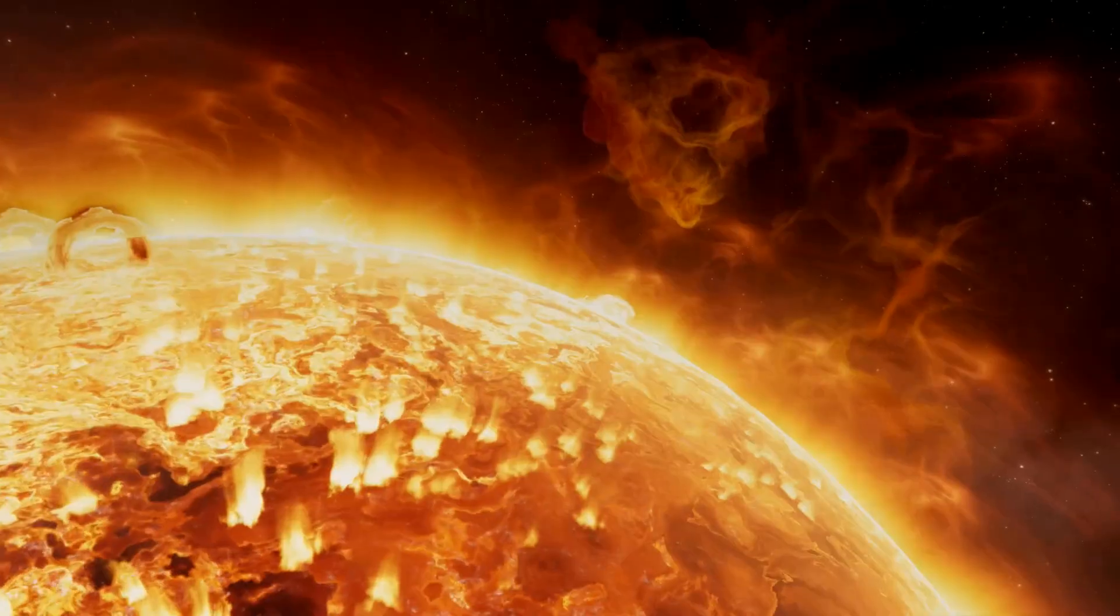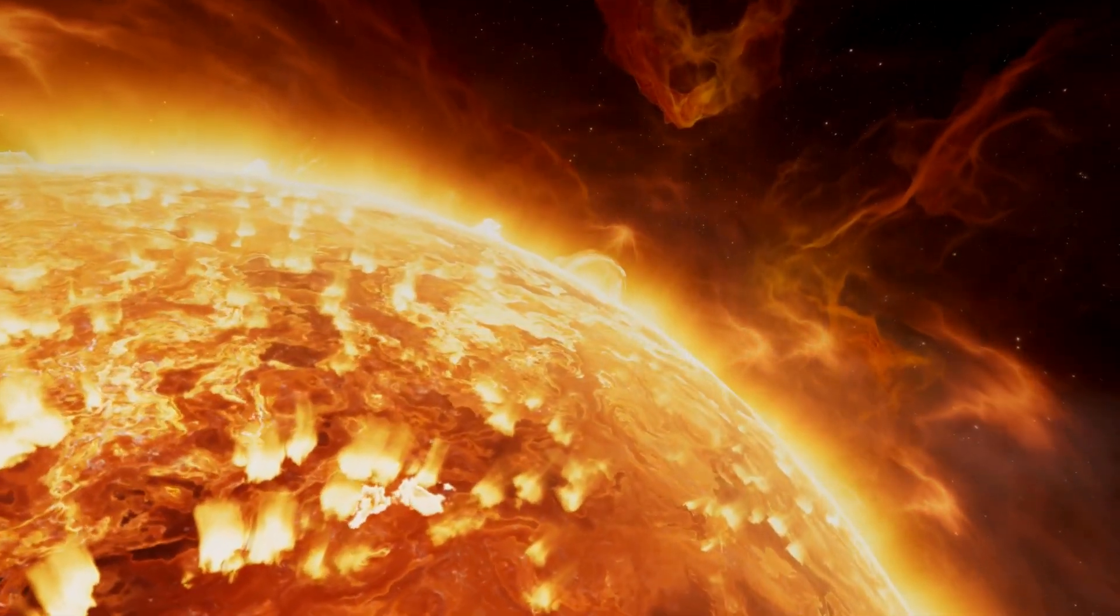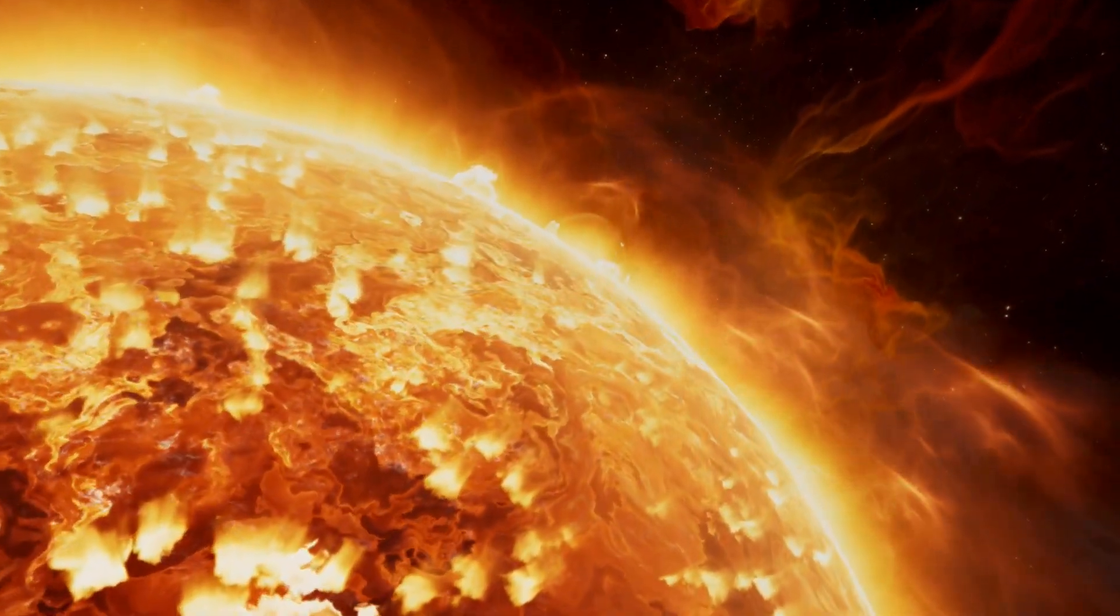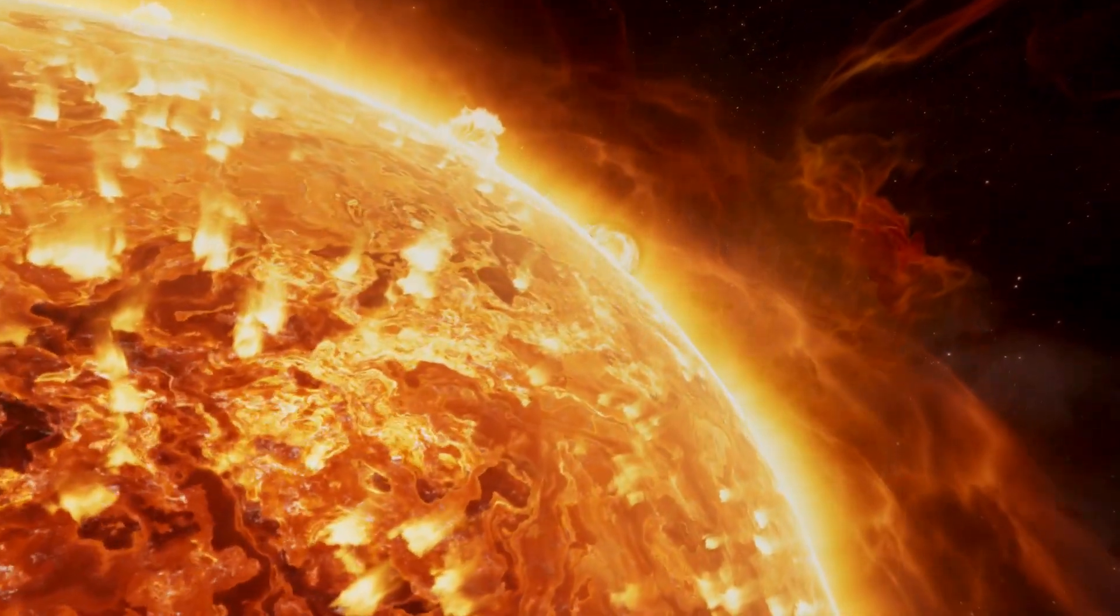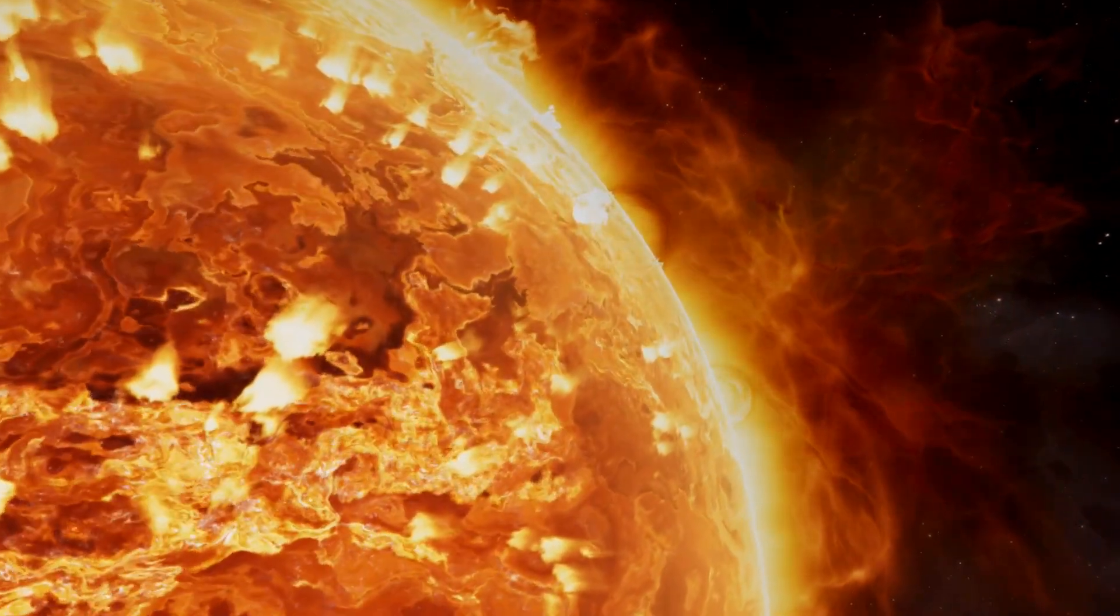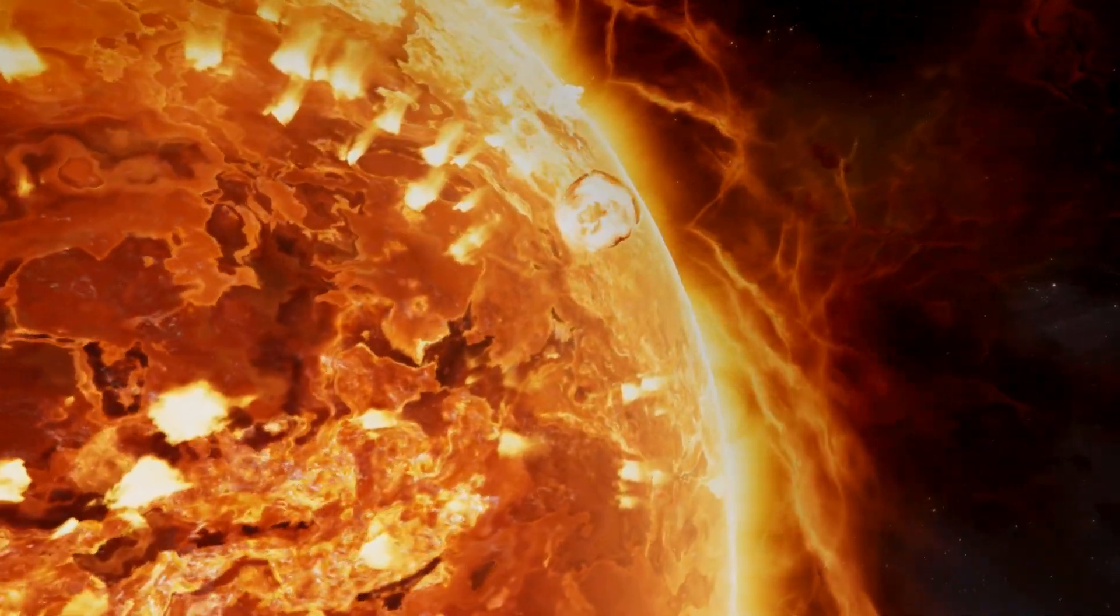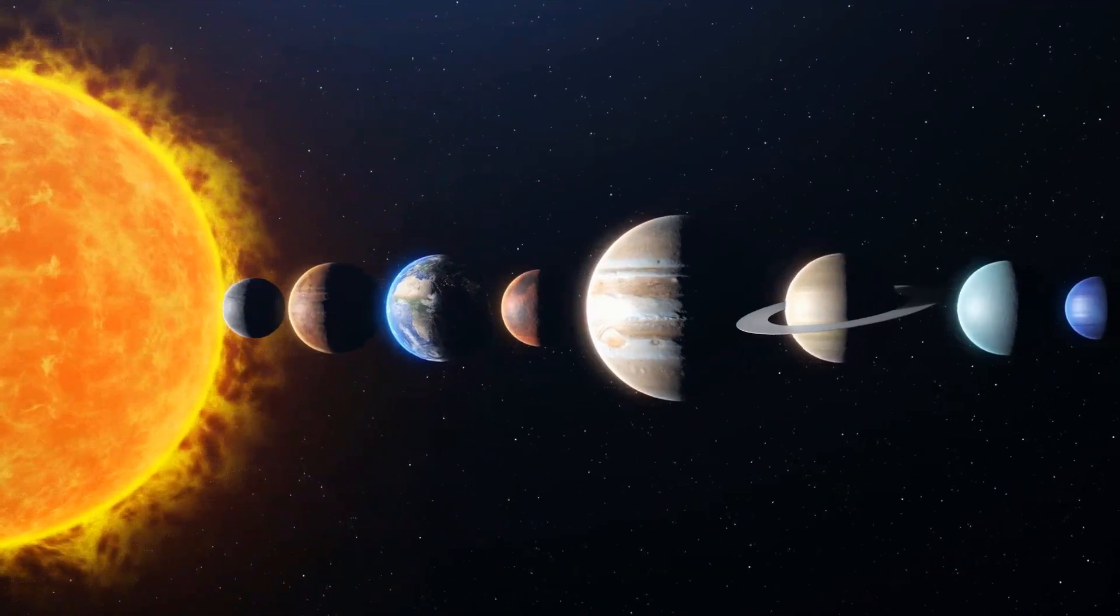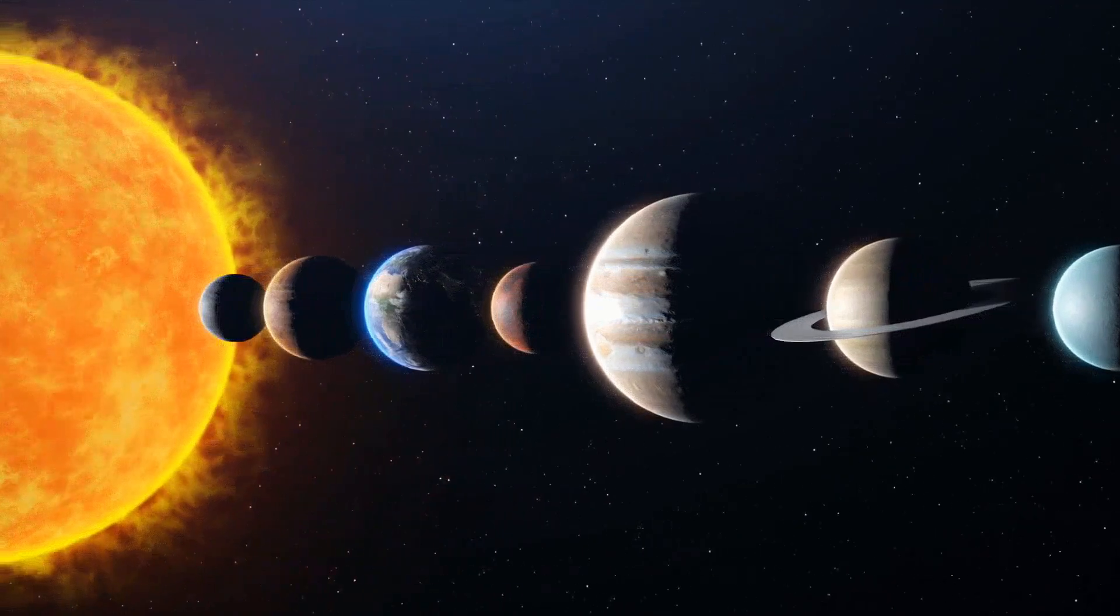At its core, the Sun is incredibly hot, with temperatures reaching about 27 million degrees Fahrenheit. This intense heat is generated through nuclear fusion, where hydrogen nuclei fuse to form helium, releasing a tremendous amount of energy in the process.